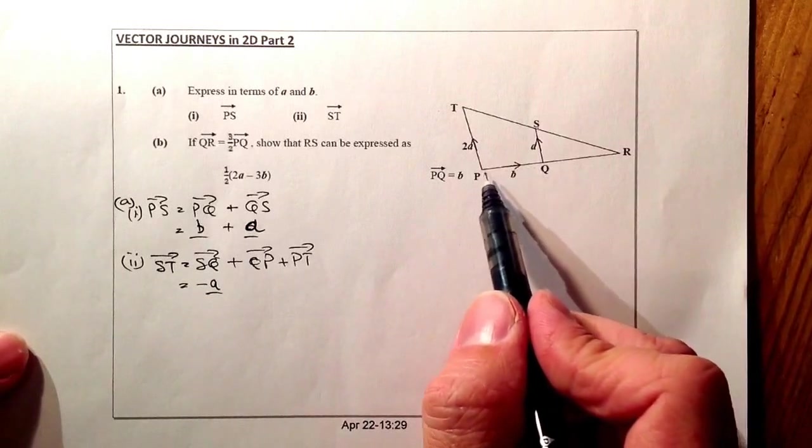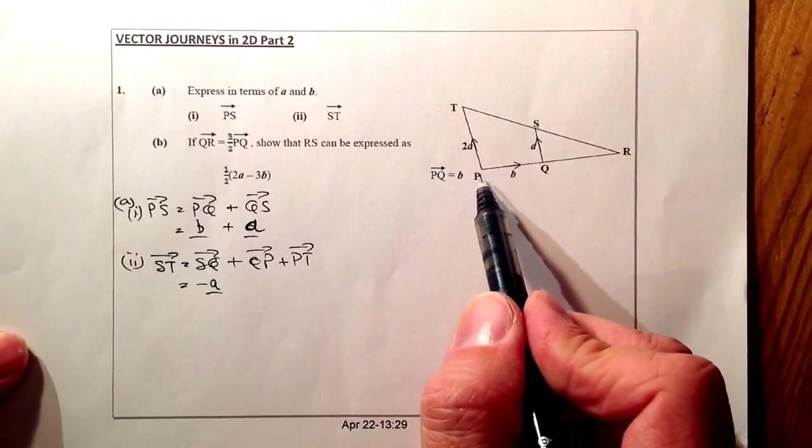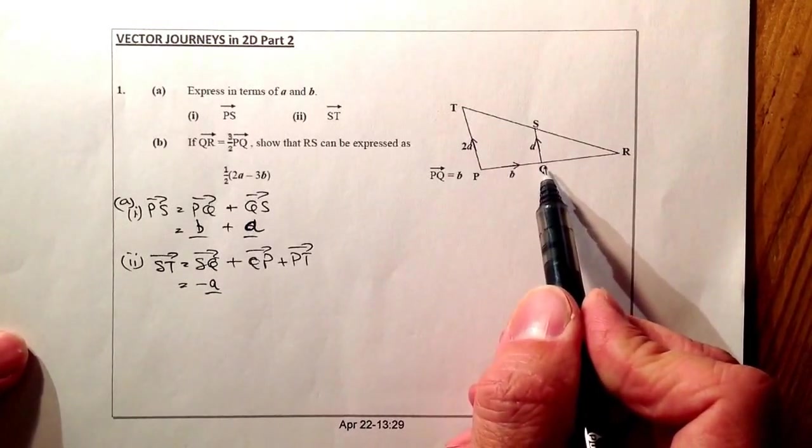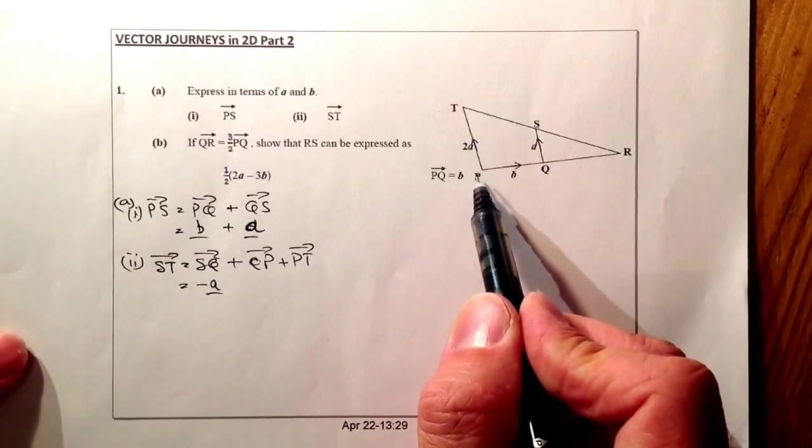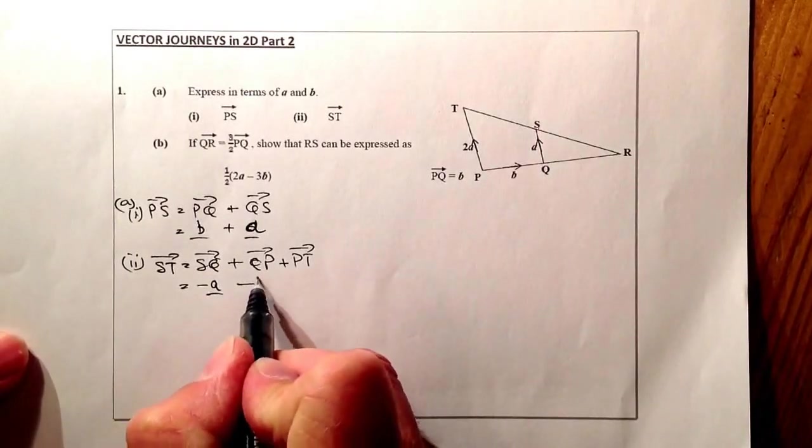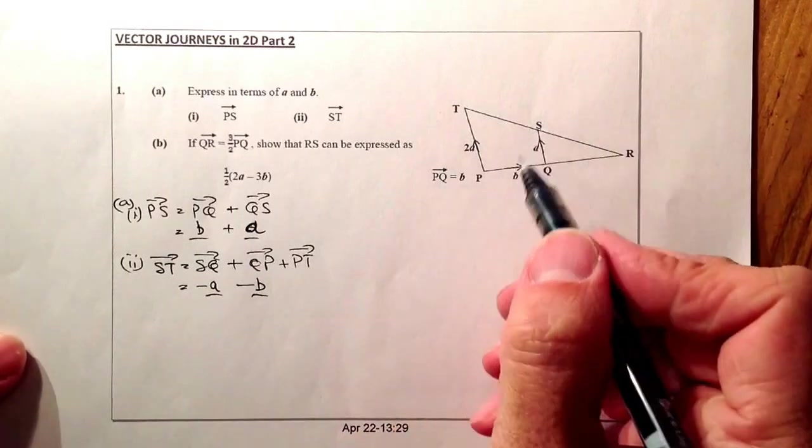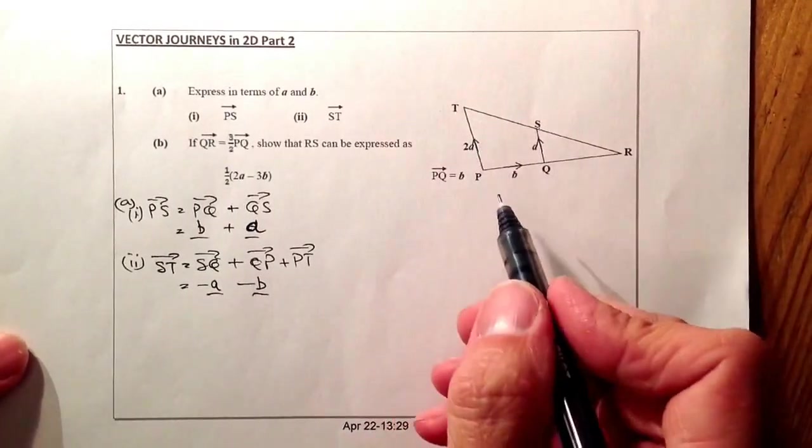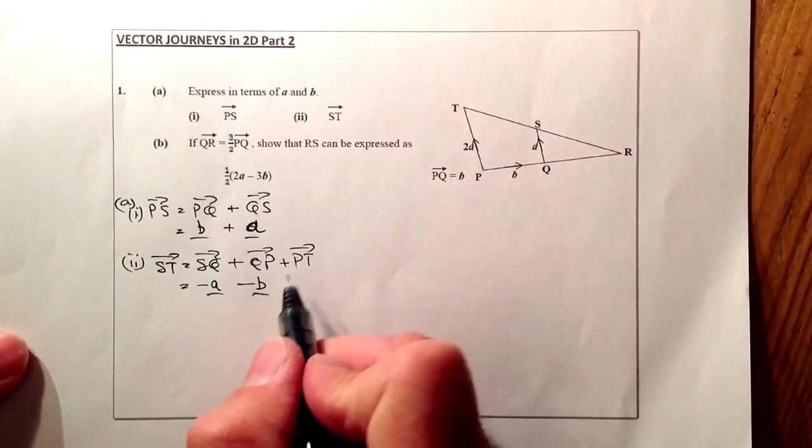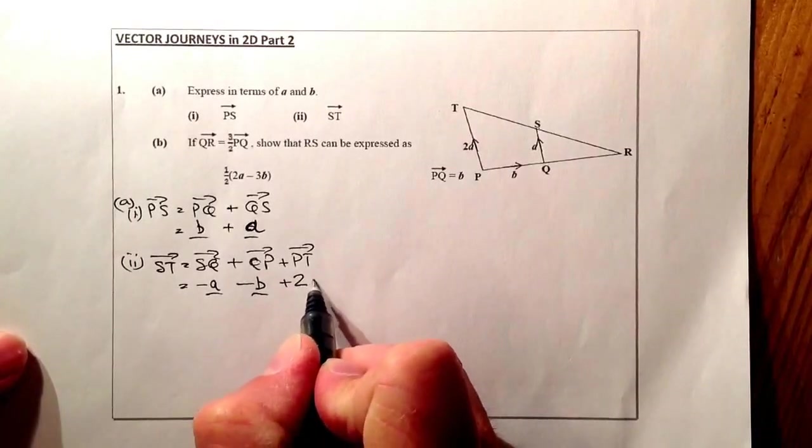QP, so I'm going to add on QP. So Q to P, what I've got there is I'm going to be going in the opposite direction of B, so that's going to be a minus B that's going to appear there. P to T, P to T is 2A, and it's in that direction, so that's going to be positive plus 2A.